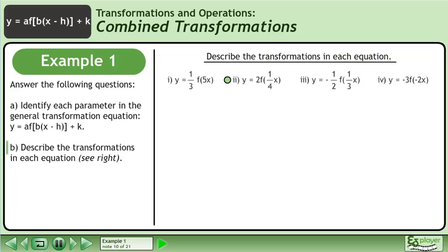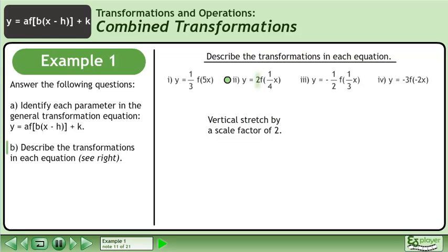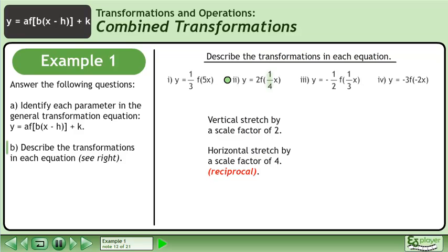Next we have the transformation y equals 2 times f of 1 over 4x. b equals 1 over 4. This is a horizontal stretch by a scale factor of 4, since we use the reciprocal for horizontal stretches.